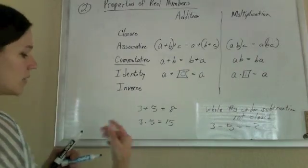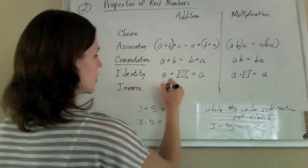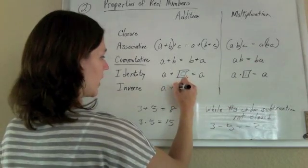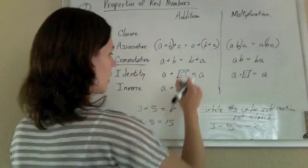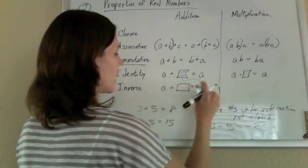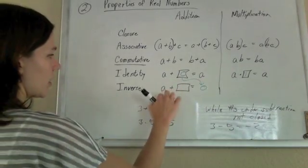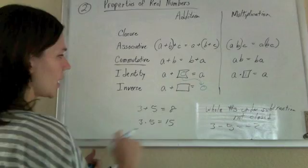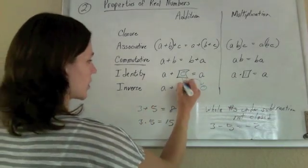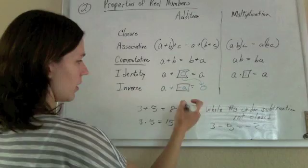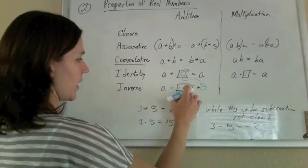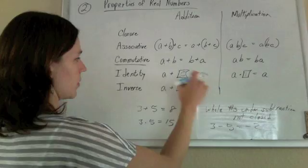Now for the inverse, if we want to undo A, if I want A plus something to give me whatever my identity element is, what would I do? Here, our inverse is going to be negative A. Because A plus negative A gives us the identity element, which was 0.